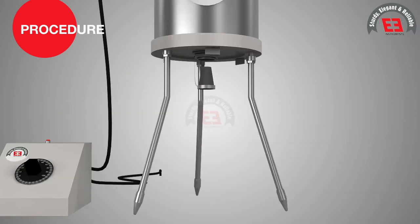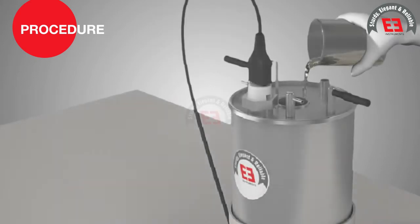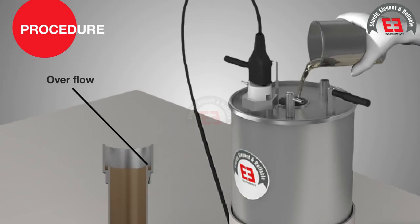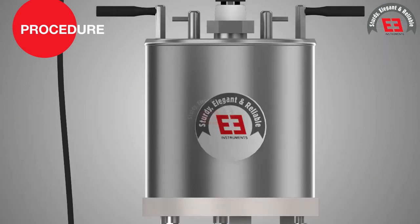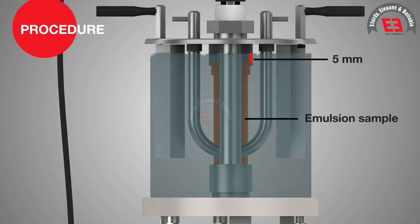Insert the cork to the bottom of the oil tube, taking care that the cork fits tightly enough to prevent the escape of air, as confirmed by the absence of oil on the cork after it is withdrawn. Pour the emulsion into the oil tube up to overflow into the gallery. The tube with the emulsion sample is fixed to the support in the bath such that the top of the overflow rim is 5 mm below the surface of the water in the bath.